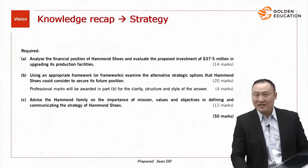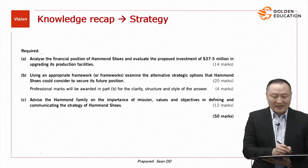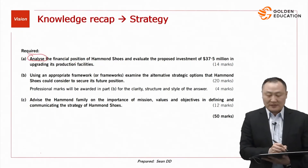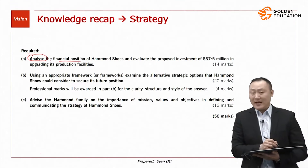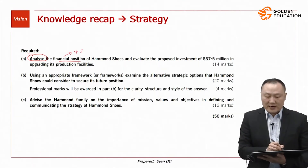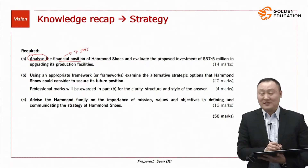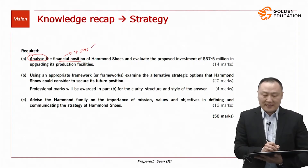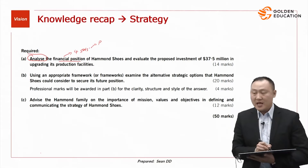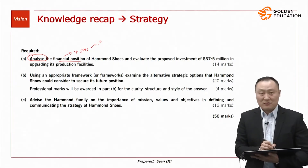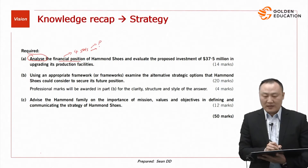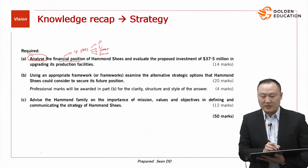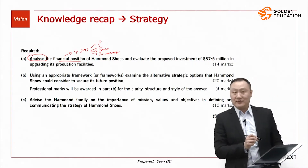Before we start any questions, we have to read the requirement first. The first requirement is: analyze the financial position of Harman Shoes. Whenever the question asks you to evaluate or analyze the financial position of a company, there are four sets of ratios to think about. The first is profitability ratios, such as ROCE, net profit margin, and gross profit margin. After that, we have liquidity ratios, debt ratios, and investment ratios.